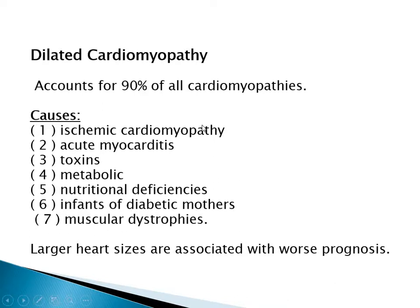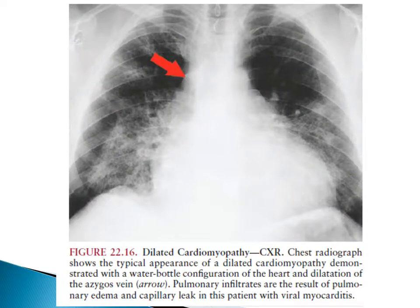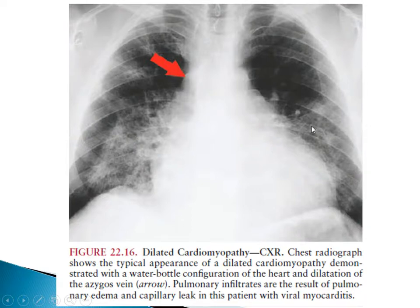Dilated cardiomyopathy accounts for 90% of all cardiomyopathies. Causes include ischemic cardiomyopathy, acute myocarditis (usually caused by virus such as coxsackievirus), toxins such as doxorubicin, metabolic causes, nutritional deficiency, infants of diabetic mothers, and muscular dystrophies. Larger heart size is associated with worse prognosis. This chest x-ray shows a large cardiac shadow with a water bottle configuration, dilated azygos vein, and pulmonary infiltrates as a result of pulmonary edema and capillary leak.